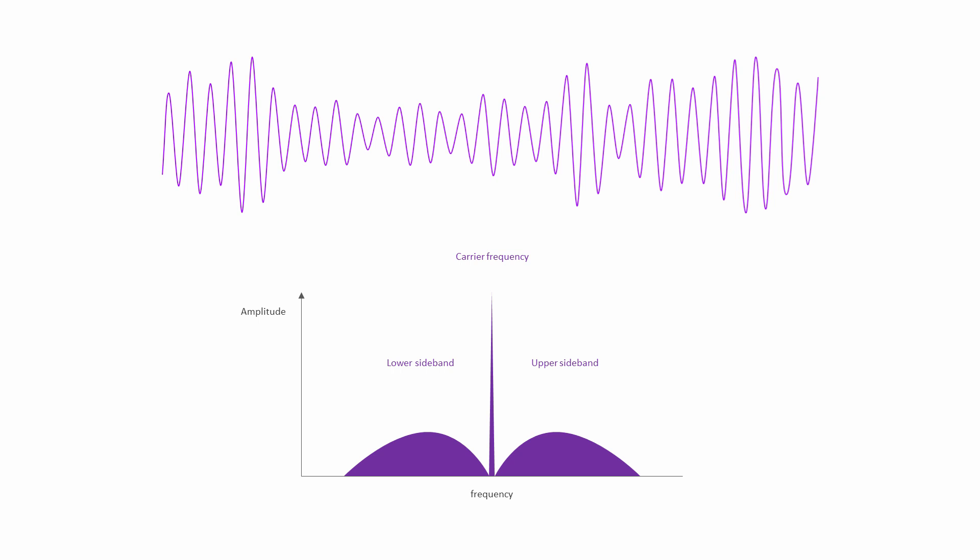The sidebands are always mirror images of each other, and each contains a copy of the same information. So when broadcasting, there's no need to transmit both sidebands. Some transmitters will use circuitry or software known as a filter to suppress the carrier and one of the sidebands, thereby saving power and reducing bandwidth.